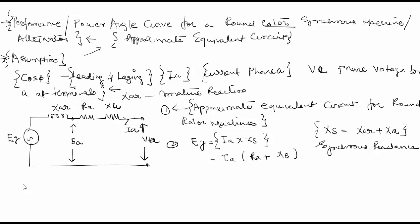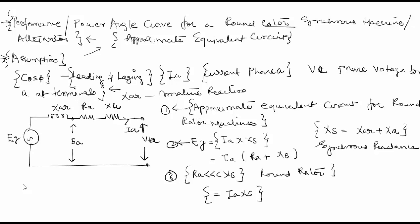After this second step, the third assumption is that RA is very much less than XS. If we consider this, then we can simplify to IA into XS. We are considering a round rotor machine where the armature resistance is very much less than the leakage reactance plus the armature reactance, which is the synchronous reactance.